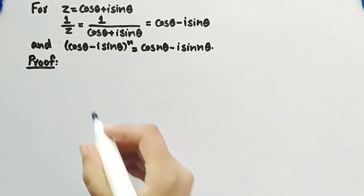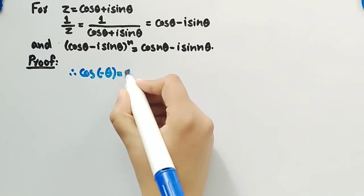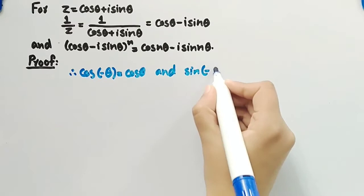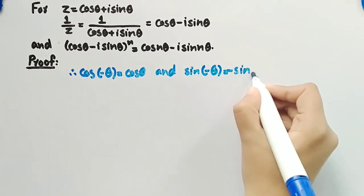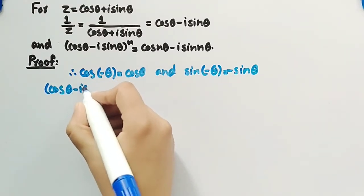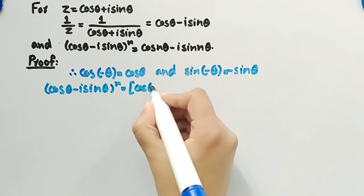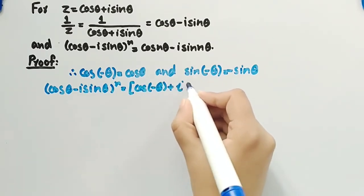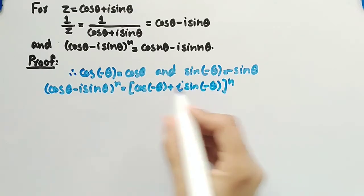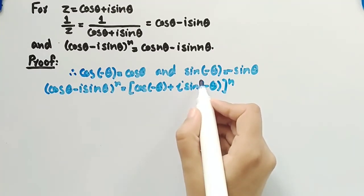From trigonometry, we know that cos(−θ) = cos θ and sin(−θ) = −sin θ. Using these identities, we can write (cos θ − i sin θ)^n as (cos(−θ) + i sin(−θ))^n, where we have replaced cos θ by cos(−θ) and −sin θ by sin(−θ).